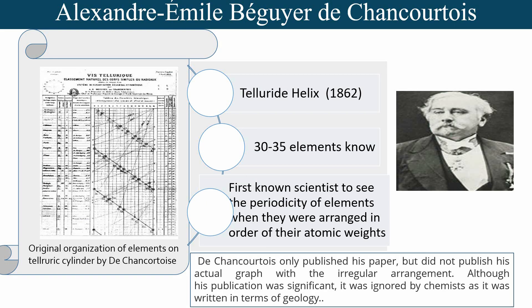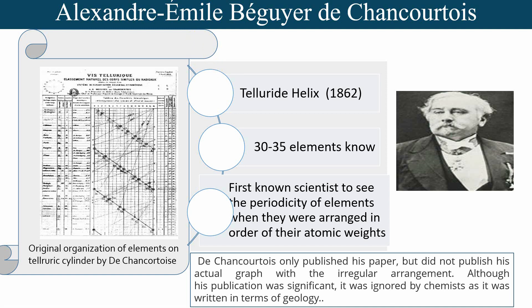Alexandre Émile de Chancourtois first created the cylindrical representation of the periodic table in 1862. He arranged the elements based on their atomic weights along a spiral, grouping elements of similar properties in the same vertical line. He arranged 16 elements in a single spiral, termed the telluric helix, as the cylindrical periodic arrangement included the element tellurium. This provided a visual way to see the periodicity of elements.